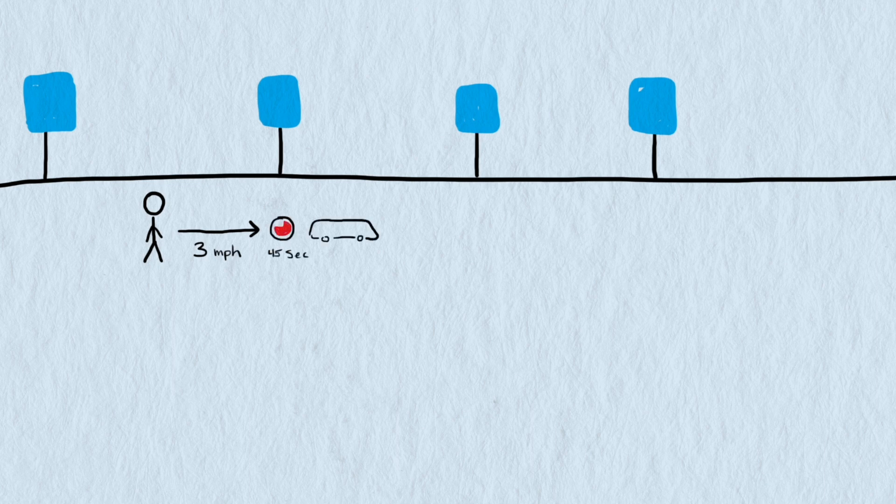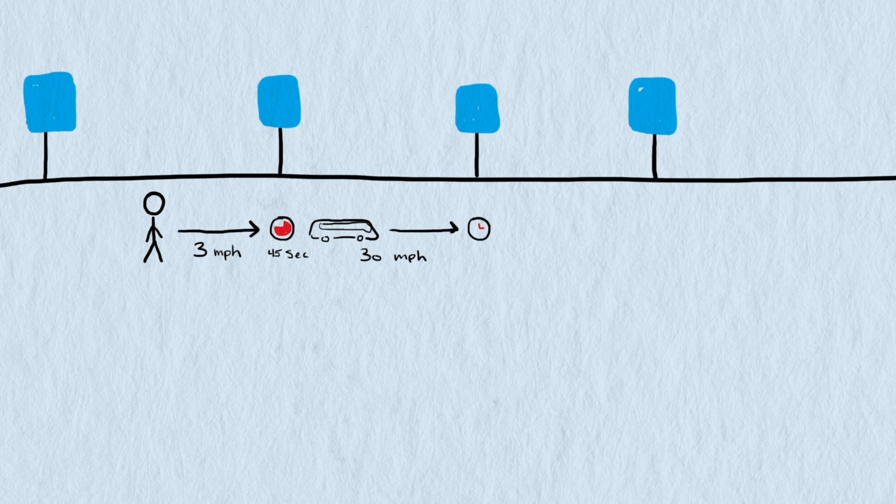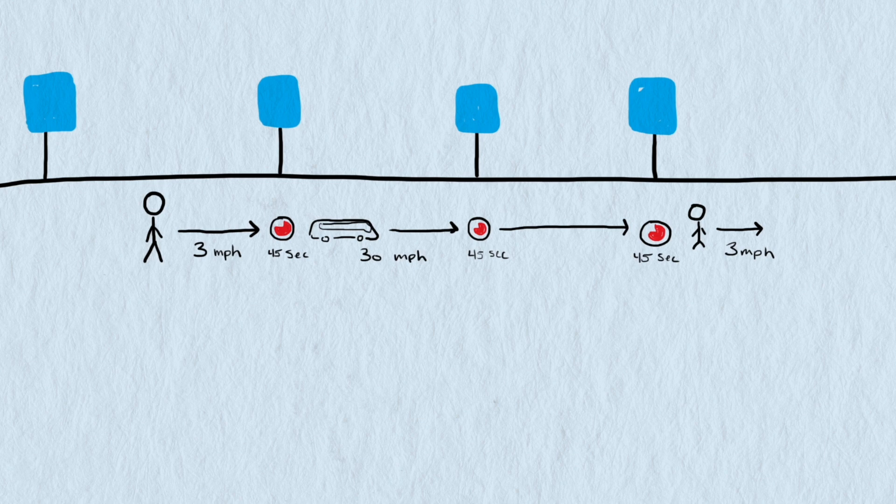The bus drives an average of 30 miles an hour. The bus stops for 45 seconds on average at each bus stop. I'll also assume that there's no wait time for the passenger so the bus is there when the passenger arrives. With these assumptions we can start to build our model.